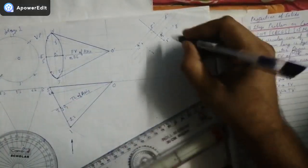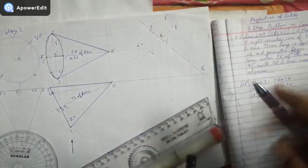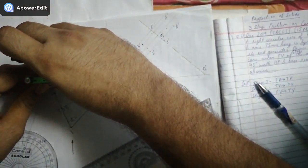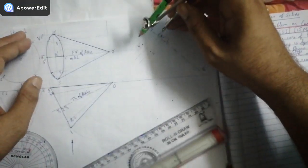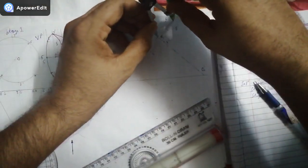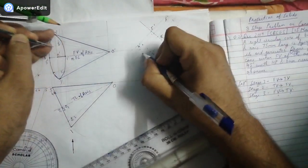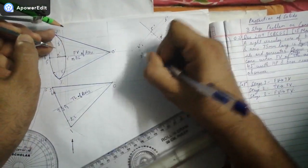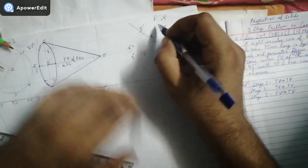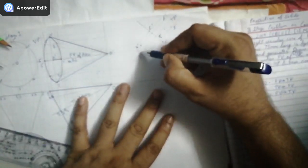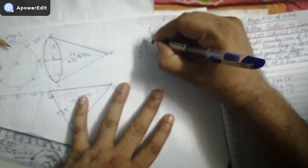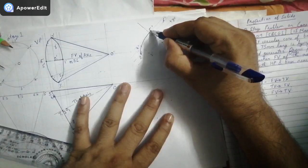Once all points are plotted — 6 dash, 4 dash, 2 dash, 8 dash, 3 dash, and 7 dash — we construct the similar smooth ellipse curve again, as drawn previously. The curve is completed like this.